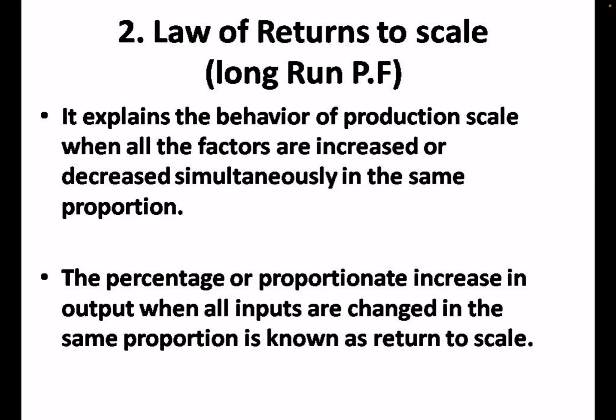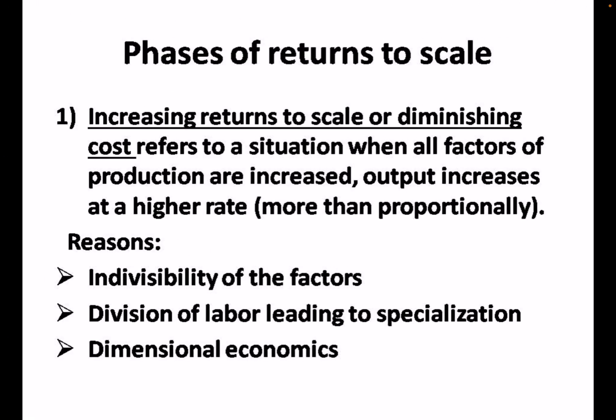The second law is the law of returns to scale, which is the long-run production function. It explains the behavior of production scale when all factors increase or decrease simultaneously in the same proportion. The percentage or proportionate increase in output when all inputs change in the same proportion is called returns to scale. In the long run, all factors of production are variable, unlike the short run where one factor is fixed.